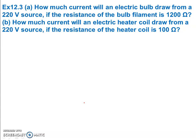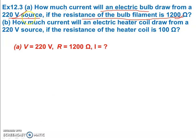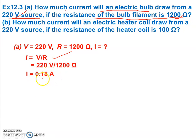Now NCERT book example 12.3: How much current will an electric bulb draw from a 220 volt source if the resistance of the bulb filament is 1200 ohm? Given: V = 220 volt, R = 1200 ohm. Find I. Using Ohm's Law: V = IR, so I = V/R = 220/1200 = 0.18 ampere.